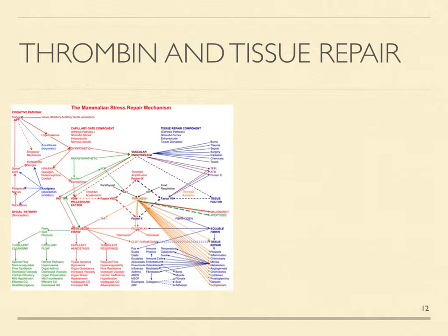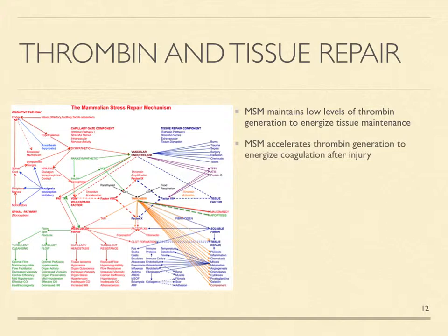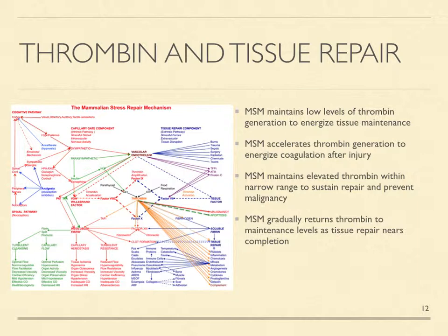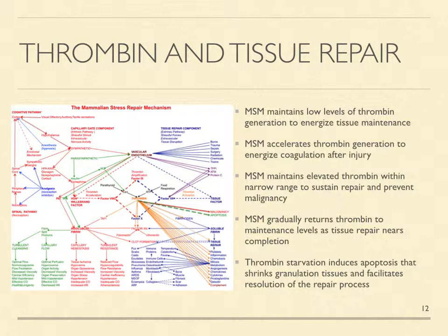This more complete MSM diagram shows thrombin pathways in orange. The MSM continuously generates small amounts of thrombin in all tissues to energize tissue maintenance. In the event of injury, it accelerates thrombin generation to energize coagulation, then regulates elevated thrombin levels within a narrow range to optimize tissue repair and prevent cellular hyperactivity that causes malignancy. As tissue repair nears completion, it reduces thrombin generation to maintenance levels. The resulting starvation induces apoptosis and clot disintegration, which facilitates resolution of the repair process.